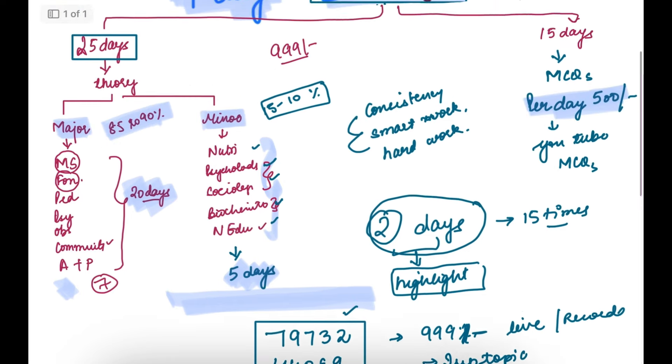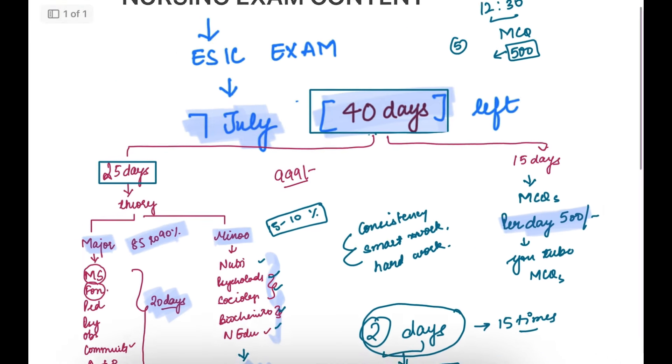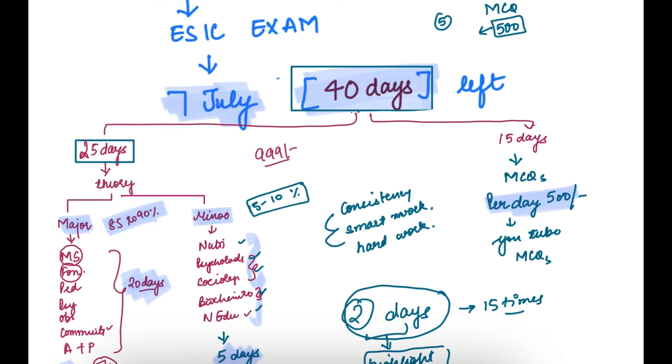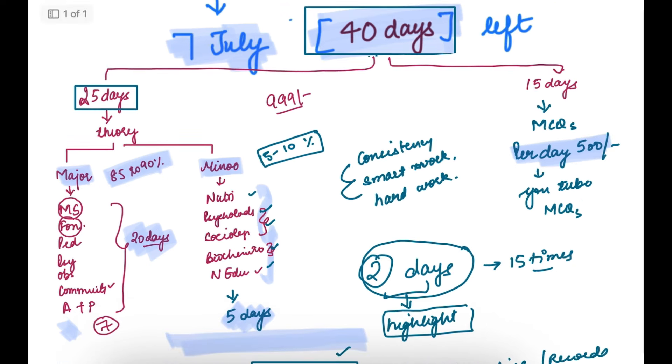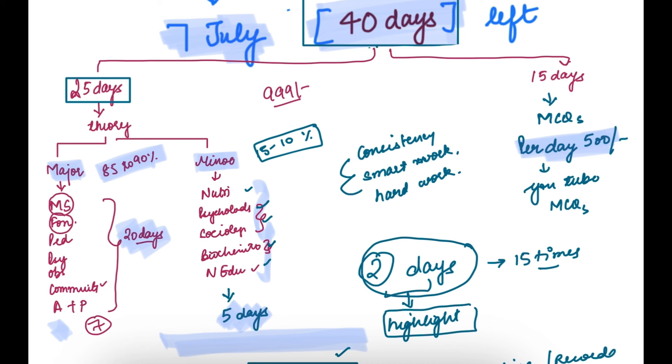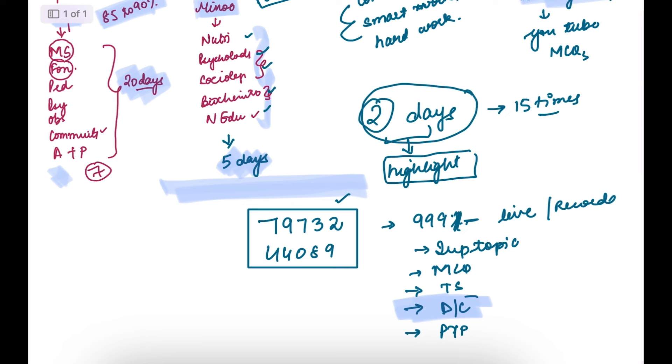If you liked this video, my way of dividing 40 days - because 40 days is a very short time period for ESIC paper - but yes, if your theory is strong and anatomy physiology is strong, if you plan these 40 days this way, I am 100% sure you can easily crack the paper. If you want to discuss any problem, you can write in the comment section. I will help you however I can. That's it for this video. See you at the MCQ class at 12:30. Stay on this channel. Till then, all the best, do hard work, make your parents proud, and all the best.